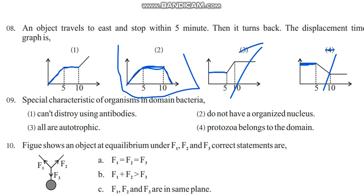Special characteristics of organisms in domain bacteria. There are three domains: bacteria, archaea, and eukarya. Bacteria - can destroy using antibodies, no we can. All are autotrophic - we'll keep that point. Do not have an organized nucleus - yes, that is a special characteristic. Bacteria and archaea do not have an organized nucleus; only eukarya has. Protozoans belong to domain bacteria - no, it's eukarya. Even bacteria, not all are autotrophic, some are heterotrophic. So the special characteristic is the second one.